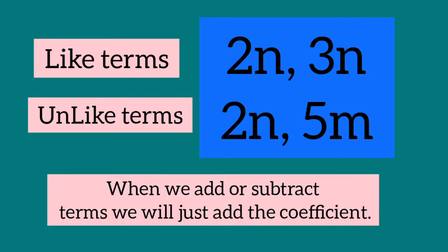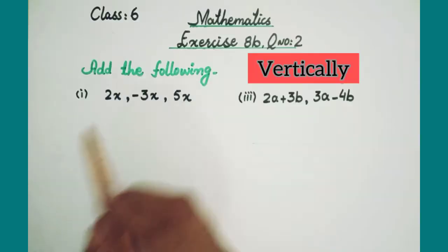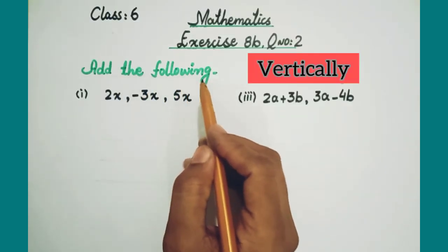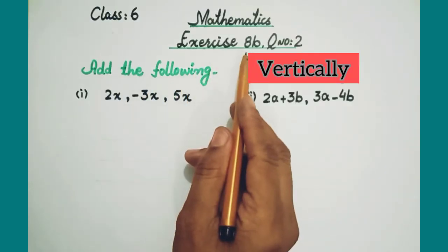One more important point: when we add or subtract terms, we will just change the coefficient. Means hum sirf coefficient ko add karenge — variable aur uski power ko change nahi karenge. Now we will solve exercise 2, which is about addition of algebraic expressions.